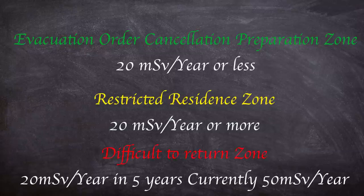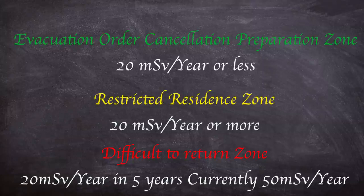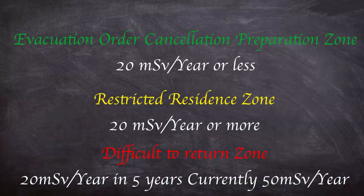Area 3, the difficult to return zone, is where it is expected that residents will not be returning home for a long time. These are the most restrictive areas and entry is prohibited unless specifically allowed and whilst in protective clothing. The annual dose in these areas is expected to be 20 millisieverts a year or more within 5 years, and the current integral dose per year is 50 millisieverts a year or more.